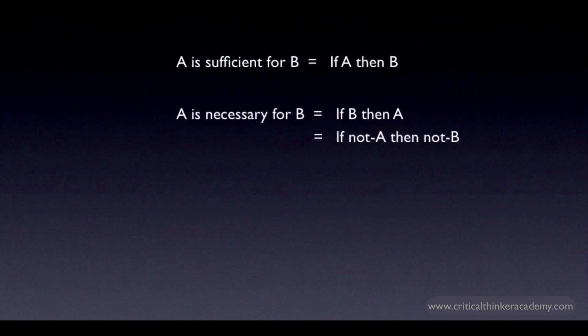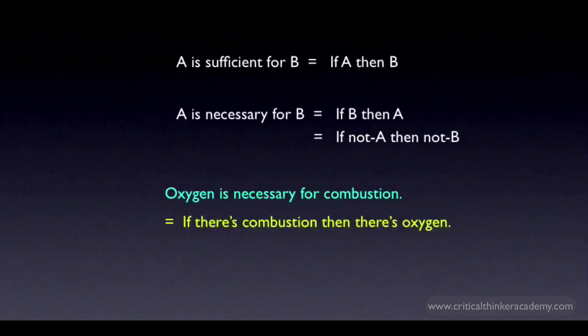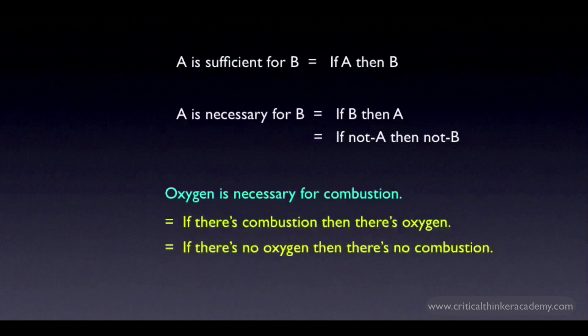The only way to make this clear is to look at some examples. Oxygen is necessary for combustion. This doesn't mean that if there's oxygen in the room, then something is going to combust — matches don't spontaneously burst into flame just because there's oxygen in the room. What it says is that if there's combustion going on, then you know that oxygen must be present. You would write that as: if there's combustion, then there's oxygen. Or in contrapositive form: if there's no oxygen, then there's no combustion. Either way will do.